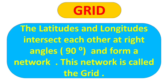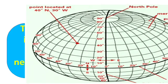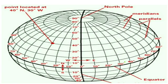What is the grid? The latitudes and longitudes intersect each other at right angles — that is 90 degrees — and form a network. This network is called the grid. In the picture, you can see parallel lines which are latitudes, and you can also see meridians which are longitudes. They are intersecting each other, and by this the network is formed, which is the grid.